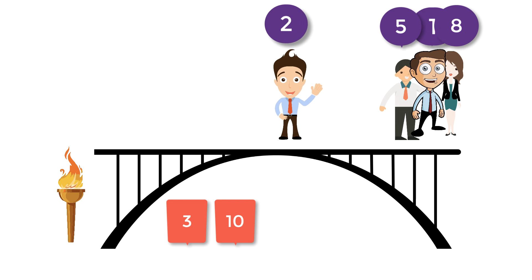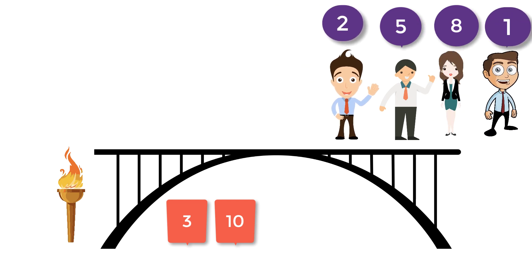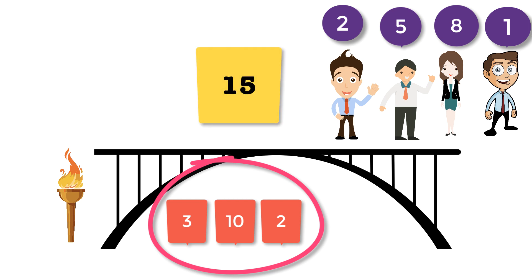At the final step, 1 and 2 cross the bridge and time taken is two minutes. Now all are on the other side. Total time spent is 3 plus 10 plus 2, that is 15 minutes. And this is the shortest time needed for all four of them to cross the bridge. This is the solution for this particular problem.